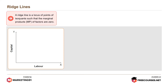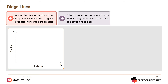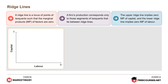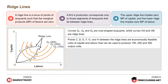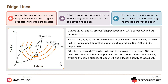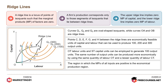Moving on to ridge lines. A ridge line is a locus of points of isoquants where the marginal products of factors are zero. A firm's production corresponds only to those segments of isoquants that lie between ridge lines. The upper ridge line implies zero marginal product of capital, and the lower ridge line implies zero marginal product of labour. Curves Q1, Q2 and Q3 are oval-shaped isoquants while curves OA and OB are ridge lines. Points C, D, E, F, G and H between the ridge lines are economically feasible units of capital and labour to produce 100, 200 and 300 output units. The region in which marginal products of all units are positive is the economical production region.